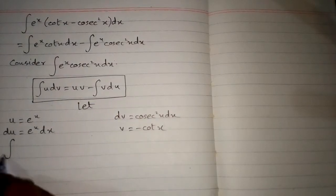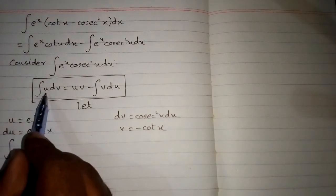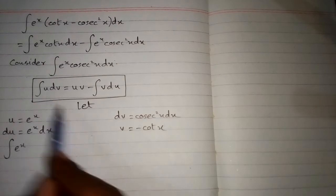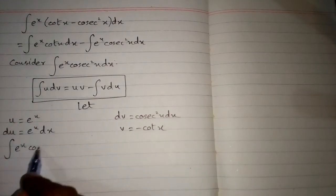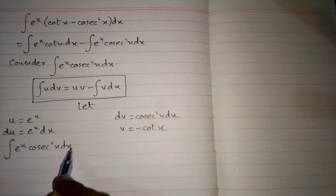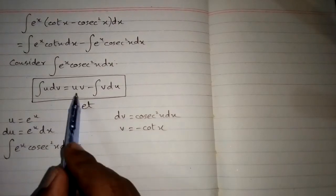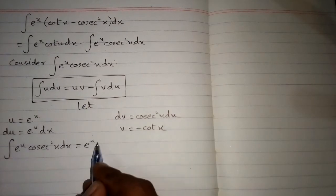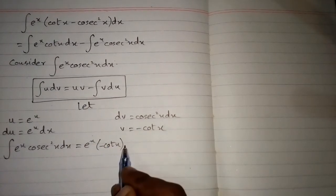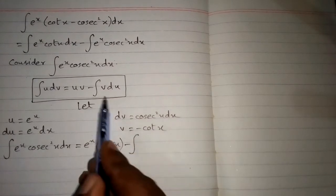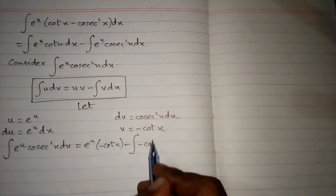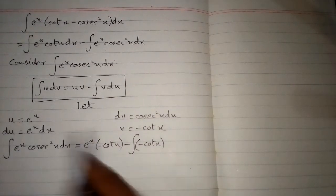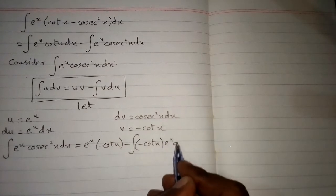Now we put the values of u, v, du, and dv into the formula. We have u equals e to the power x, v equals minus cot x, so the expression becomes e to the power x times minus cot x, minus the integral of minus cot x times e to the power x dx.